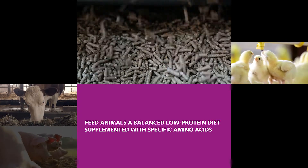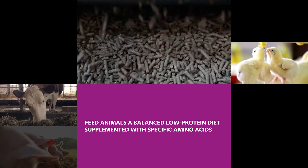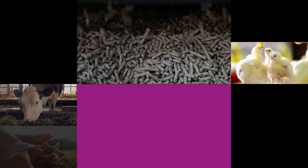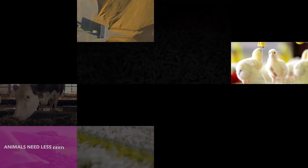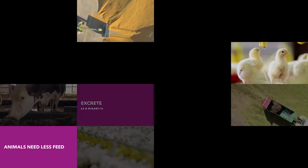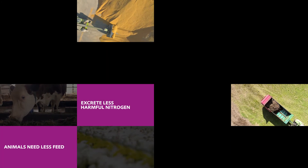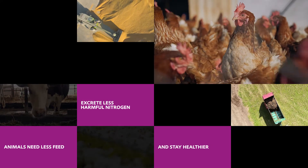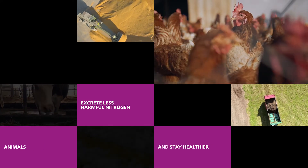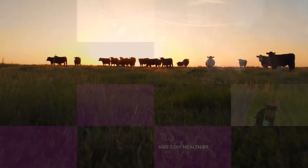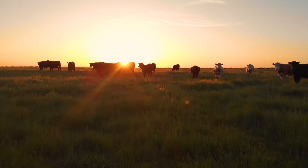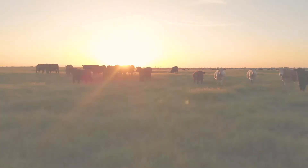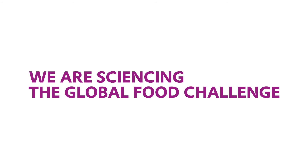To mitigate the impact of animal husbandry on nitrogen flows and reduce the burden on the environment, we feed animals a balanced low-protein diet supplemented with specific amino acids. Thus, animals need less feed, excrete less harmful nitrogen, and stay healthier. This is already possible today with amino acids and feed solutions from Evonik — we are sciencing the global food challenge.